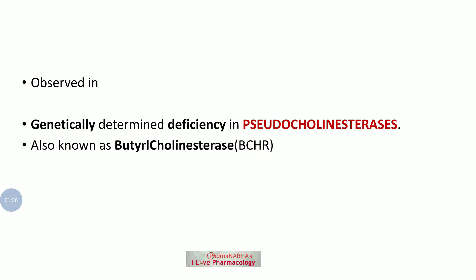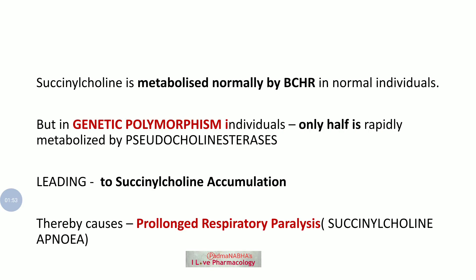Succinylcholine apnea is seen in individuals who have a genetically determined deficiency of pseudocholinesterase, also known as butyrylcholinesterase. Normally, succinylcholine is metabolized by butyrylcholinesterase in a normal individual.